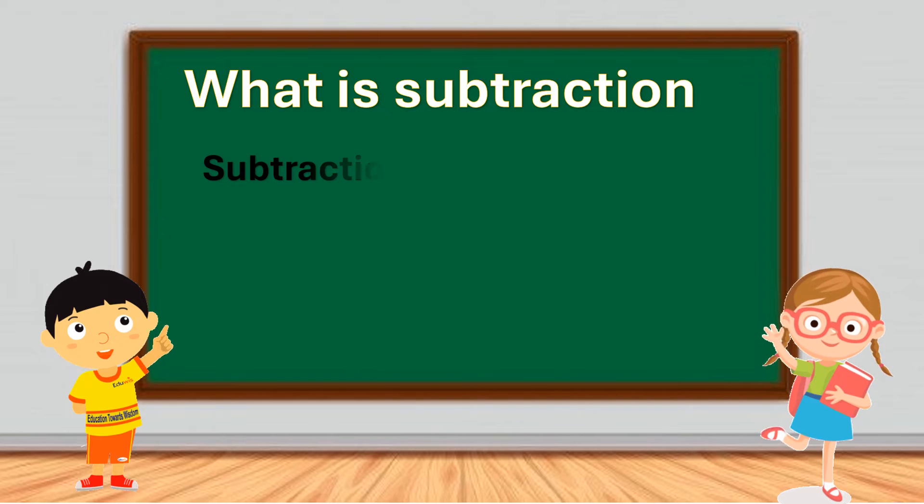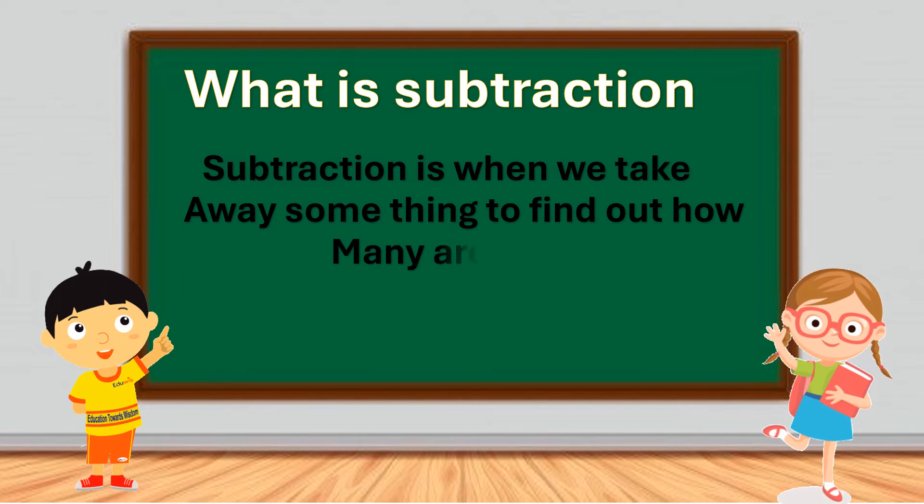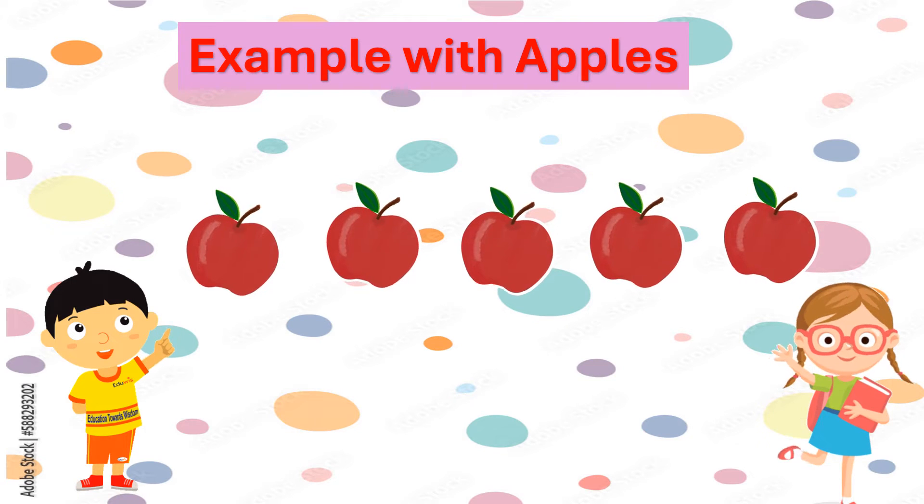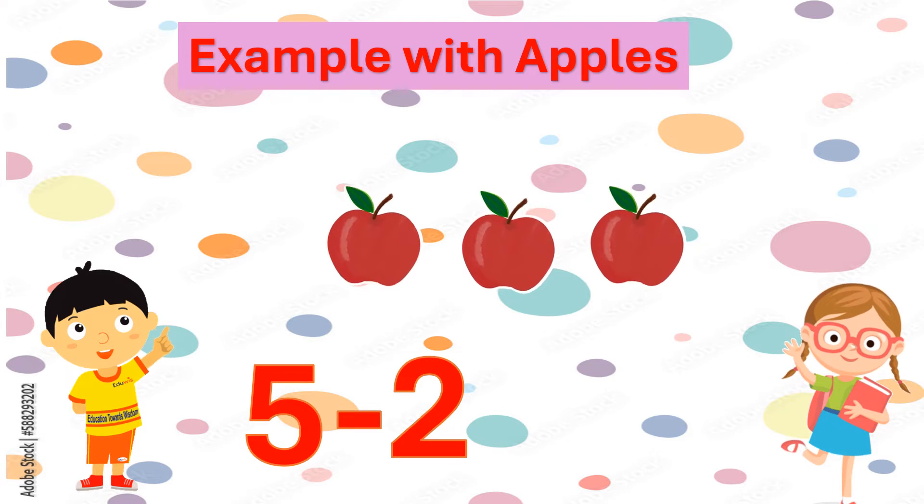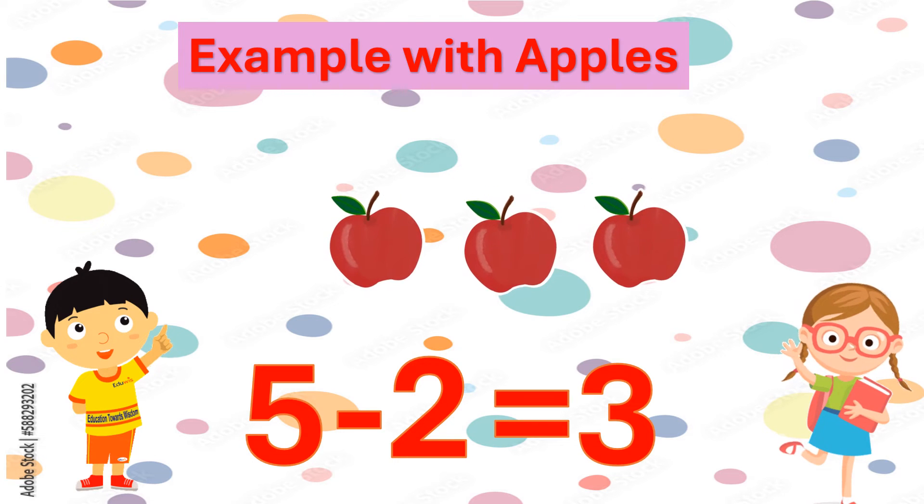Let's subtract some apples. We have five apples here. If we take away two apples, how many do we have left? One, two, three. We have three apples left. So five minus two equals three.